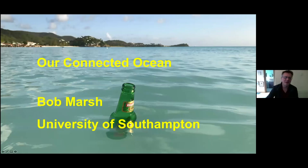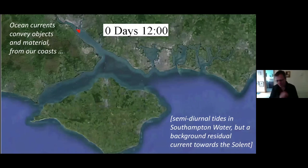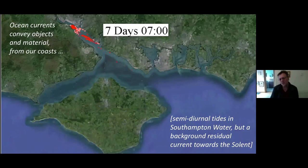Hello everybody, my name is Bob Marsh. I'm a professor at the University of Southampton and today I'm going to give a quick whistle-stop tour of the global ocean, emphasizing how connected it is and how connected we are by the ocean. This is very much about the science of physical oceanography and ocean currents, and I hope to impress on you that these currents interweave and connect through our lives around the coasts of the world's ocean and beyond. I'll be talking about a range of examples of how ocean currents move objects through the oceans and how that reflects the movement of the water itself.